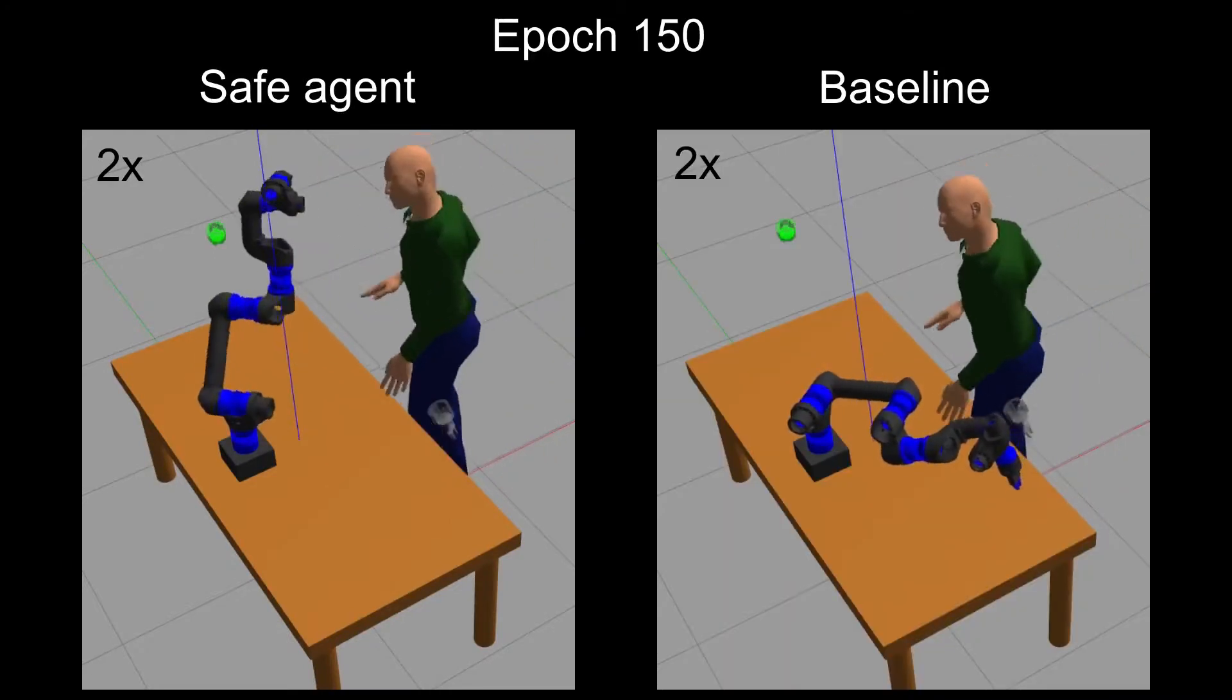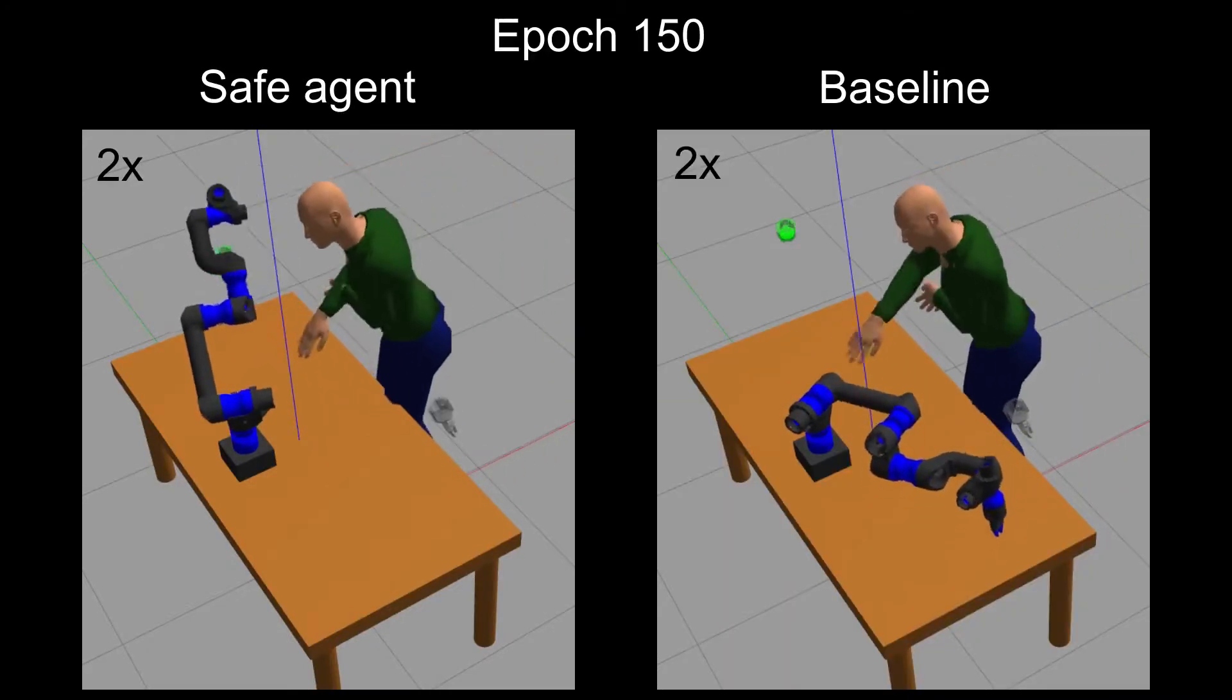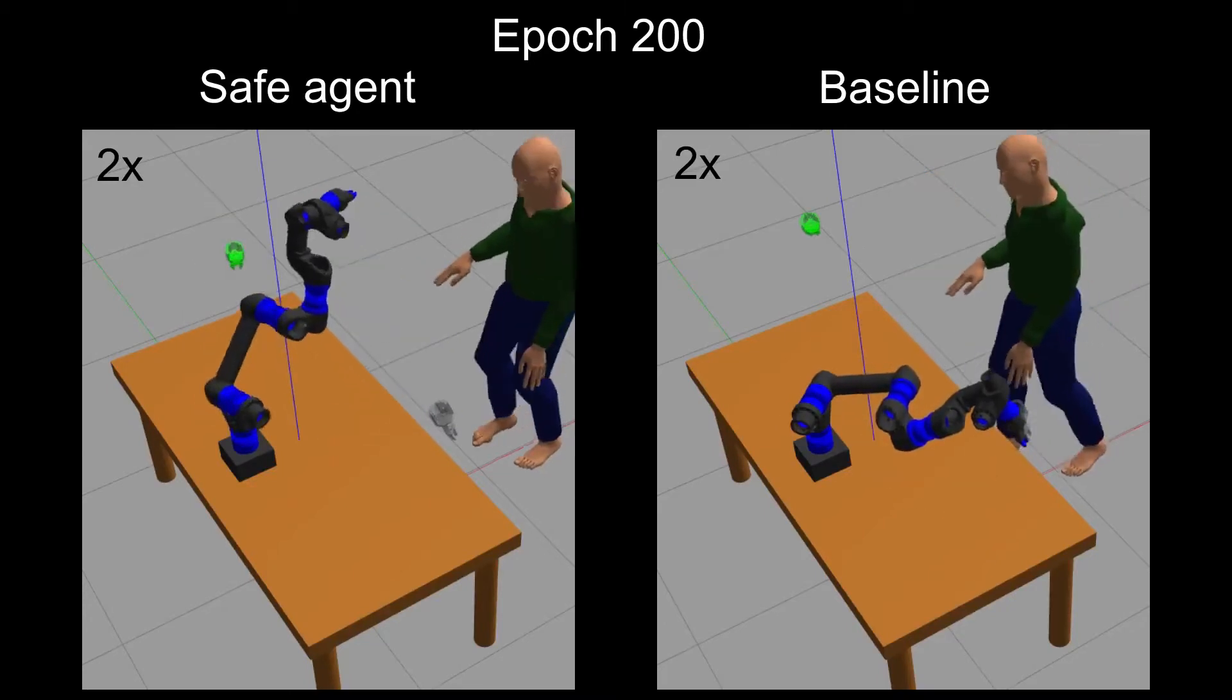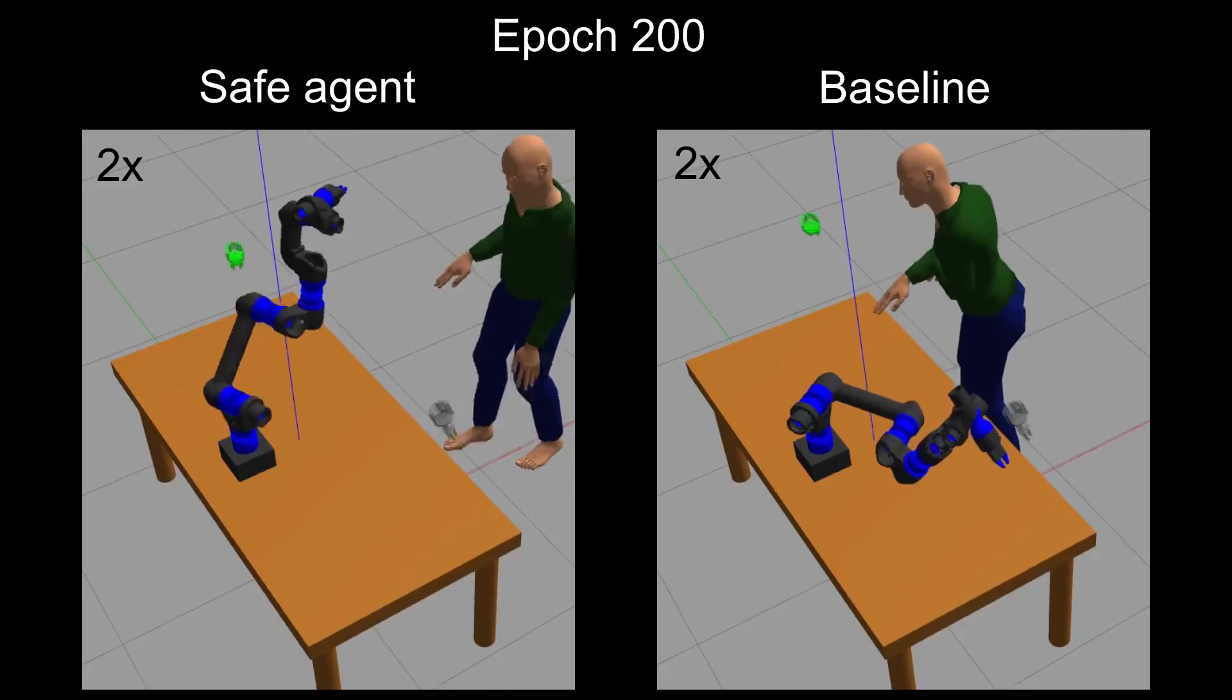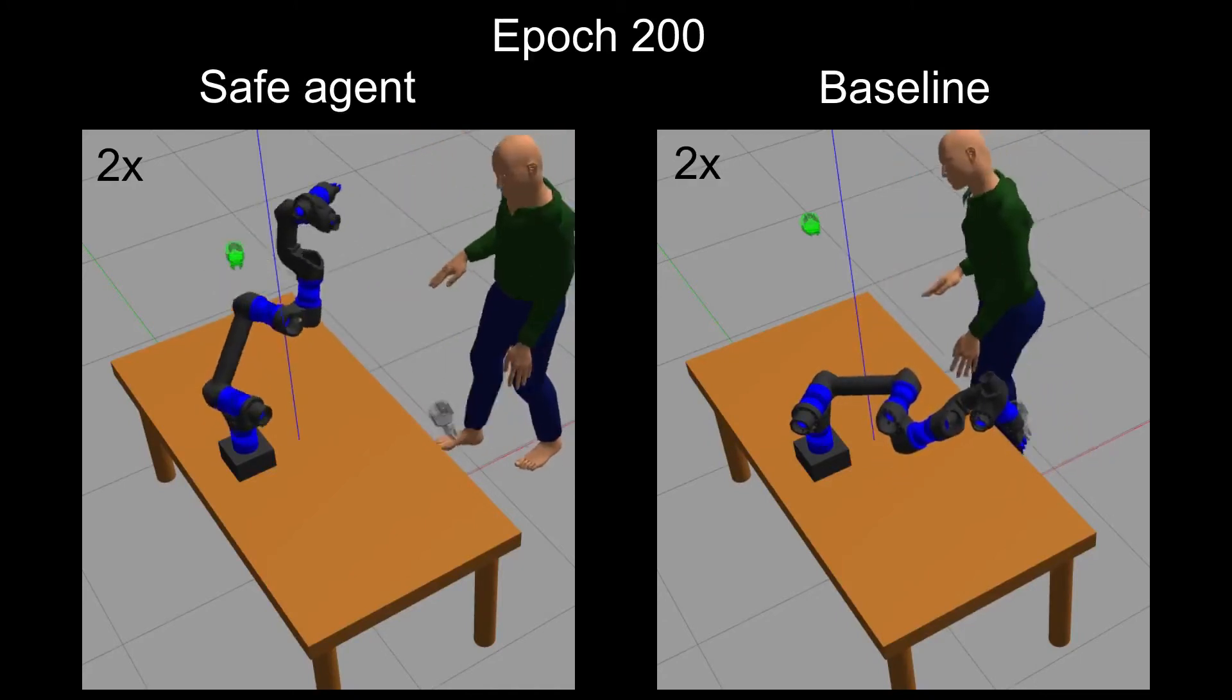At epoch 150, the safe agent consistently dodges the human and reaches its goal. By the end of the training, the safe agent reaches the goal without having to stop for the human. The baseline, however, did not learn to reach the goal at all.